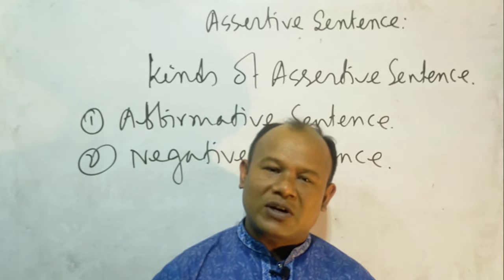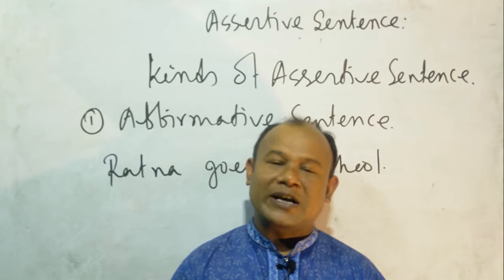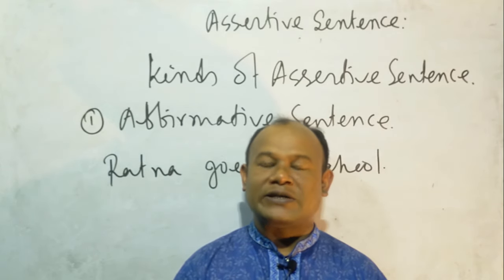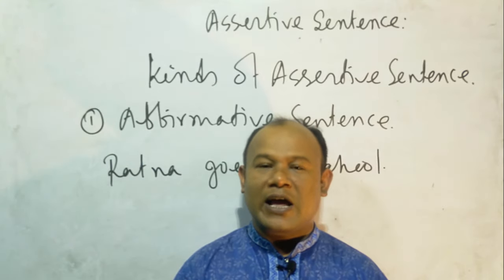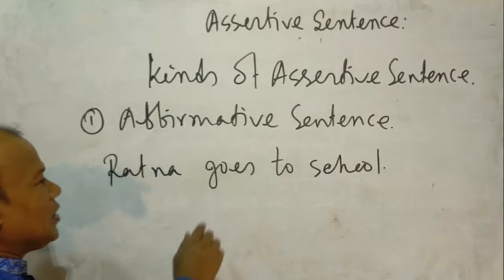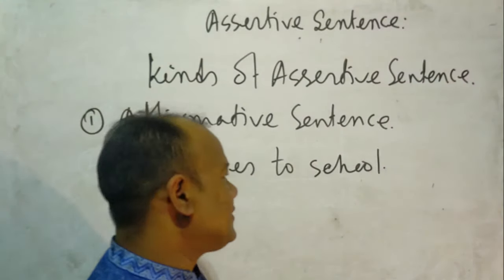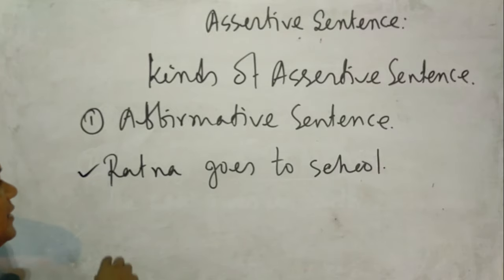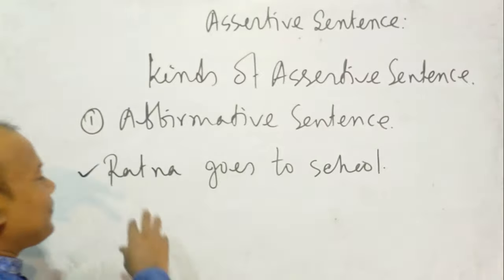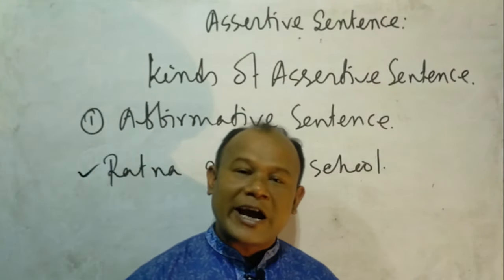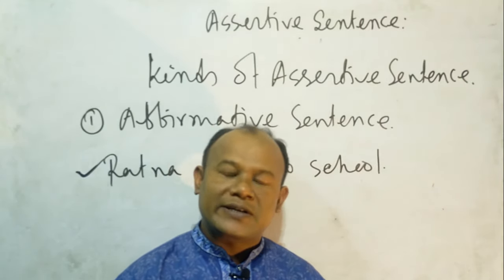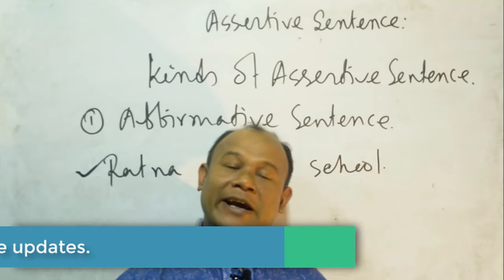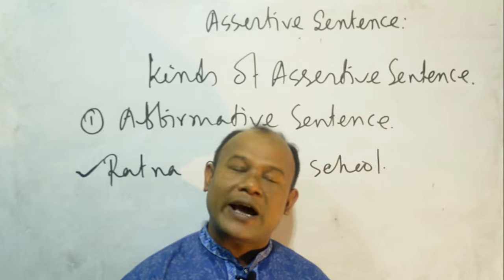Now we will learn affirmative sentence. What is called an affirmative sentence? The sentence that admits a statement, opinion, feeling, history, incident, accident, event, habitual fact, universal truth, or anything else is called an affirmative sentence. For example: Ratna goes to school — this sentence tells about Ratna and admits that Ratna goes to school. In another way, centralizing an assertive sentence, if we ask a question started with a helping verb and get the answer yes, that sentence is an affirmative sentence.